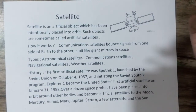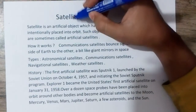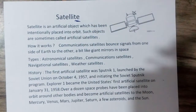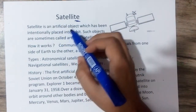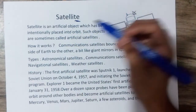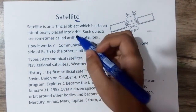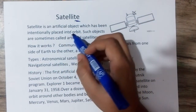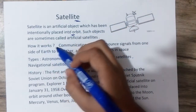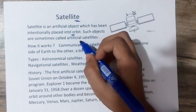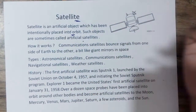Today we are going to discuss about satellites. A satellite is an artificial object which has been intentionally placed into orbit. Such objects are sometimes called artificial satellites.